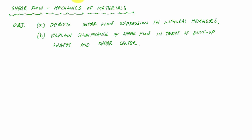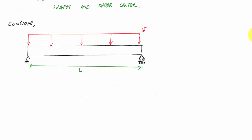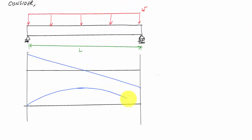To get started, let's consider a simply supported beam with a uniformly distributed loading. You can calculate the reactions and draw the shear and moment diagrams, which will look like this. For this example, when we look at the beam's cross section, it has a really narrow width that looks like this.